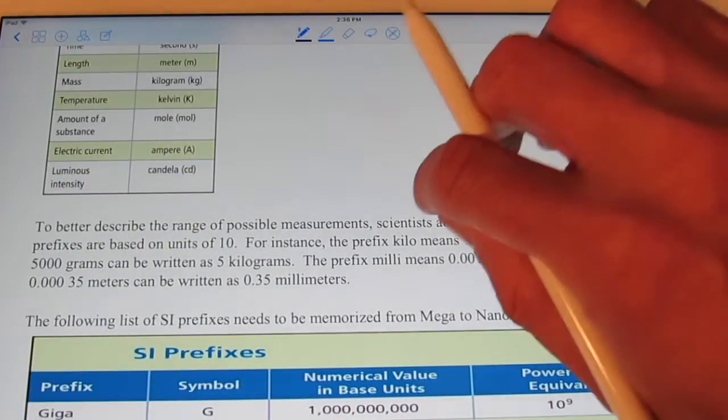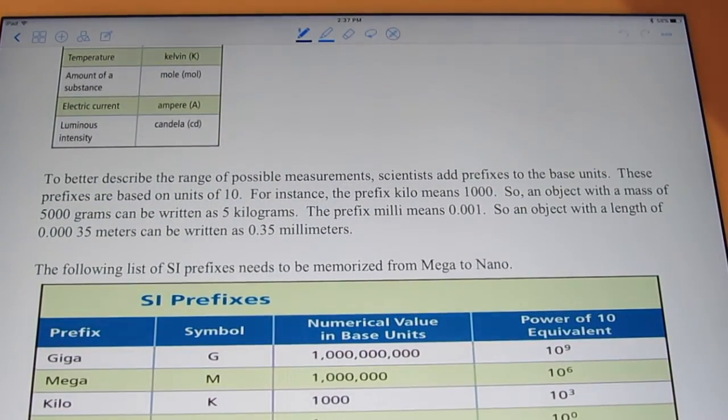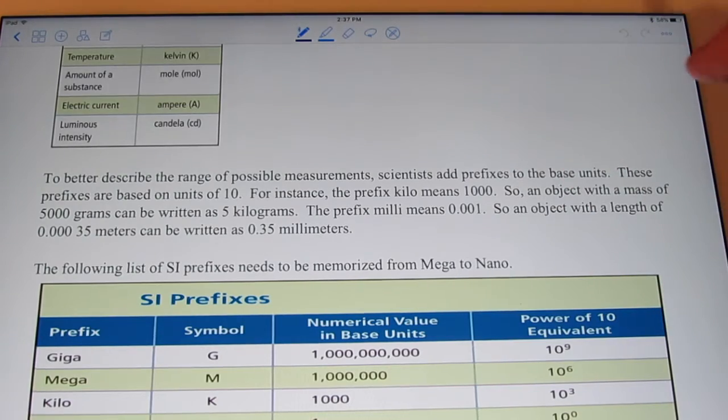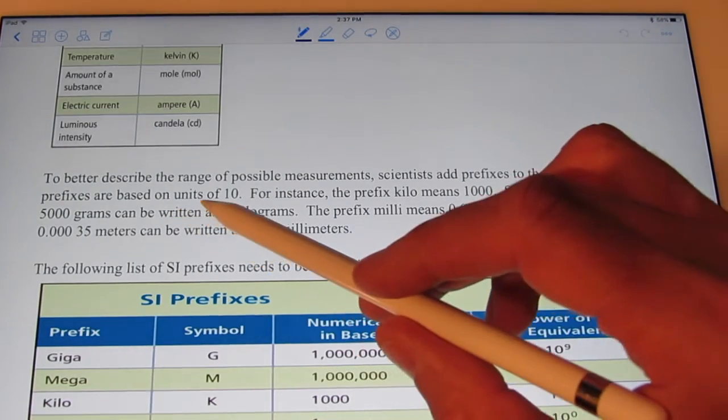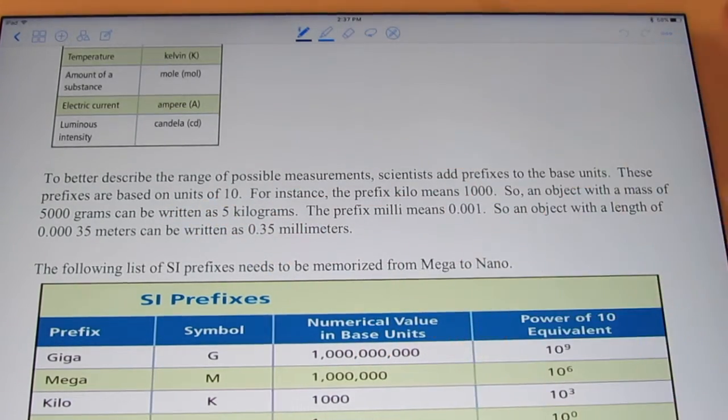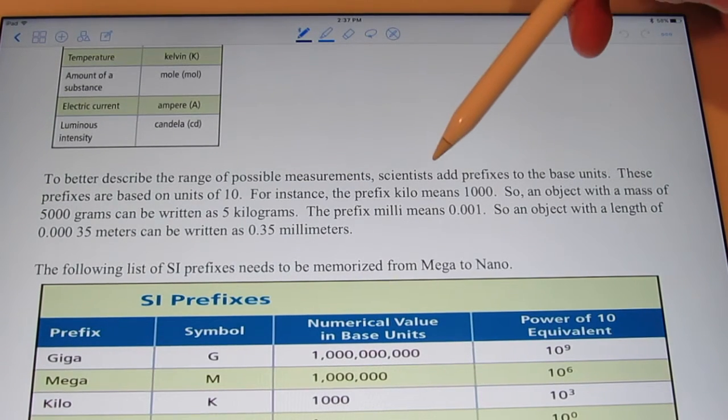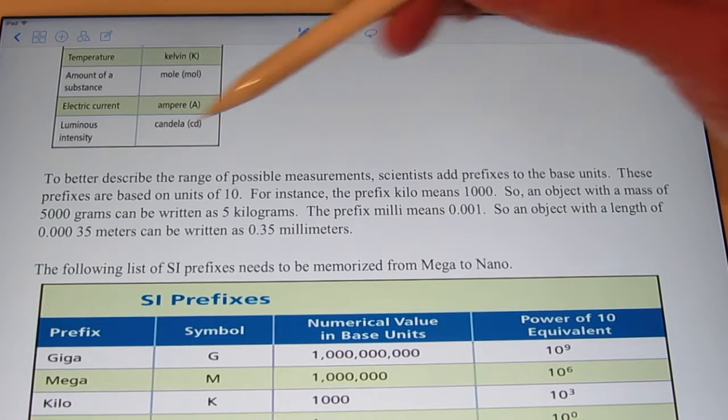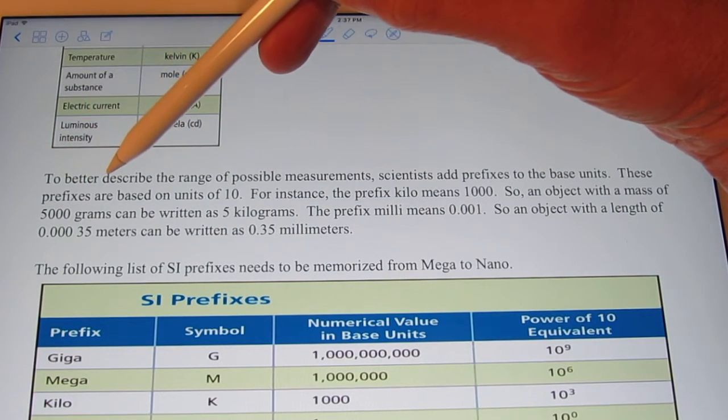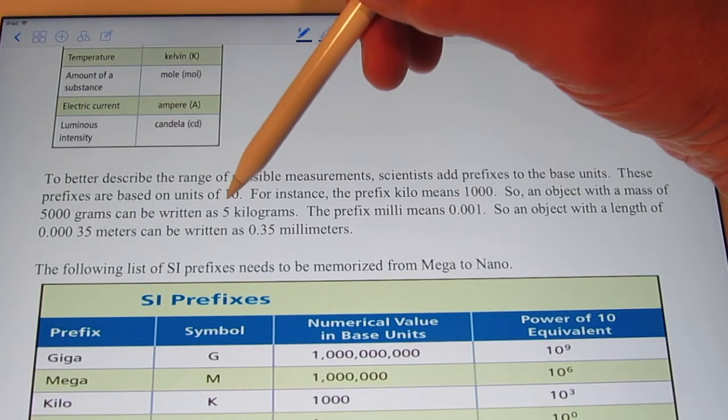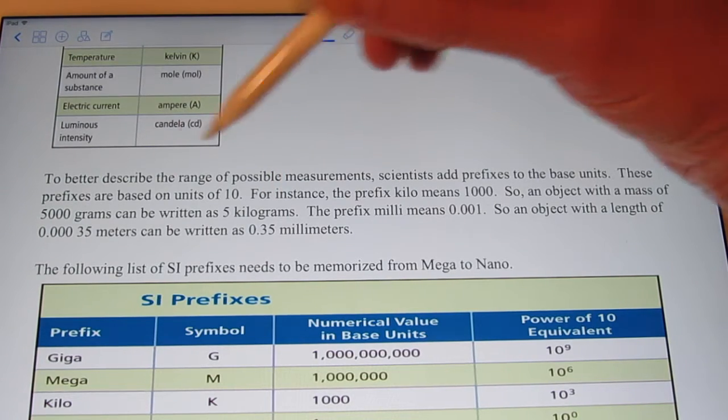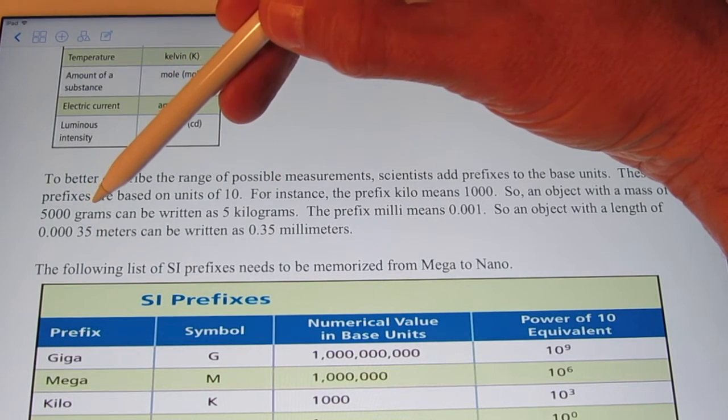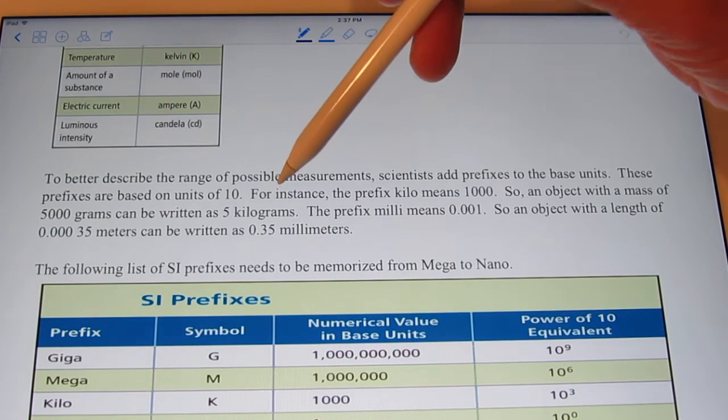To better describe the range of possible measurements, scientists add prefixes to these base units. These prefixes are based on powers of ten. For instance, the prefix kilo means a thousand. So an object that has a mass of 5,000 grams could be written as simply five kilograms.